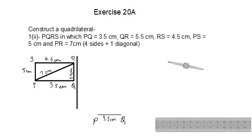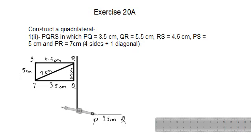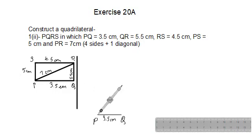Now we will bring in the compass. First keep the compass at point P. At point P we have PS and also PR — two sides. PR is the diagonal and it is of 7 centimeters. So I will open my compass up to 7 centimeters and cut an arc over here.